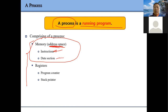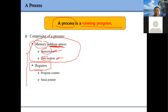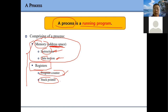A process consists of instructions and data. We need a program and data in memory — we need to find some physical memory space to hold our instructions and data. When we run a program, we at least need a program counter, which tells us where to fetch the next instruction. Stack pointer is also very important.